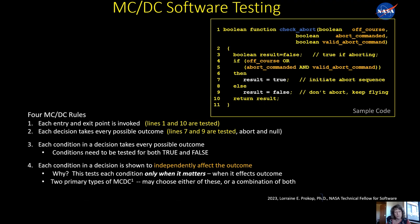So there's two primary types of MCDC. There is unique cause and masking. And in the following two slides, I'm going to go through each of them.